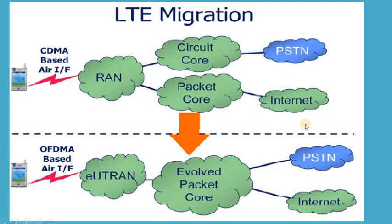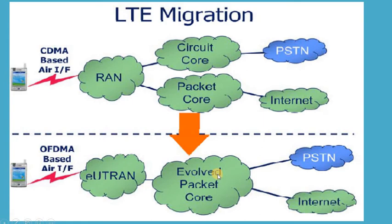Before we proceed further, let's have a brief overview of what the evolved packet core actually is. In case of 3G or WCDMA networks, the core network is basically divided into two parts: the circuit core and the packet core, generally termed as CS and PS domains. However, in LTE, they are referred to as the evolved packet core, signifying that in 4G networks, the circuit core is merged into the packet core, which is a data-driven network.